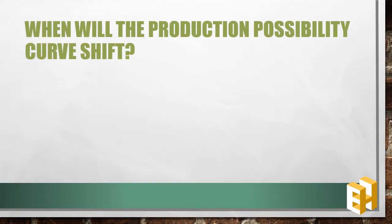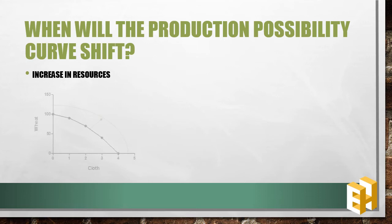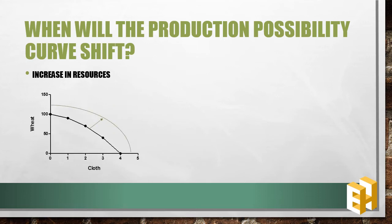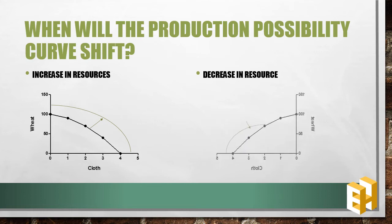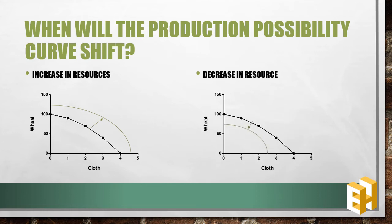A production possibility curve can shift too. If there is an increase in overall resources, the PPC would shift outwards. Whereas if there is a decrease in resources, it will shift inwards towards the origin. Remember that the shift is parallel in nature.